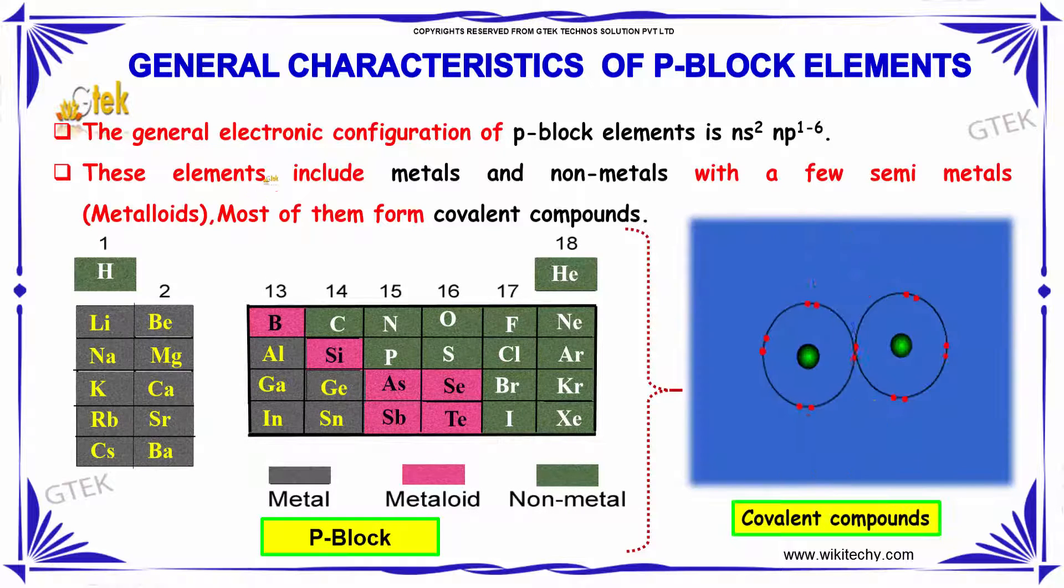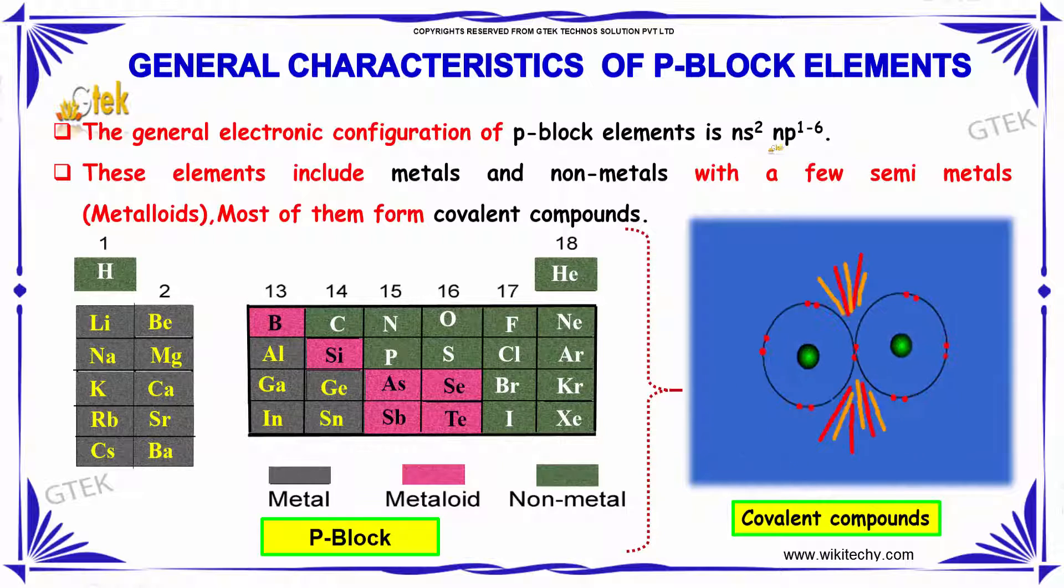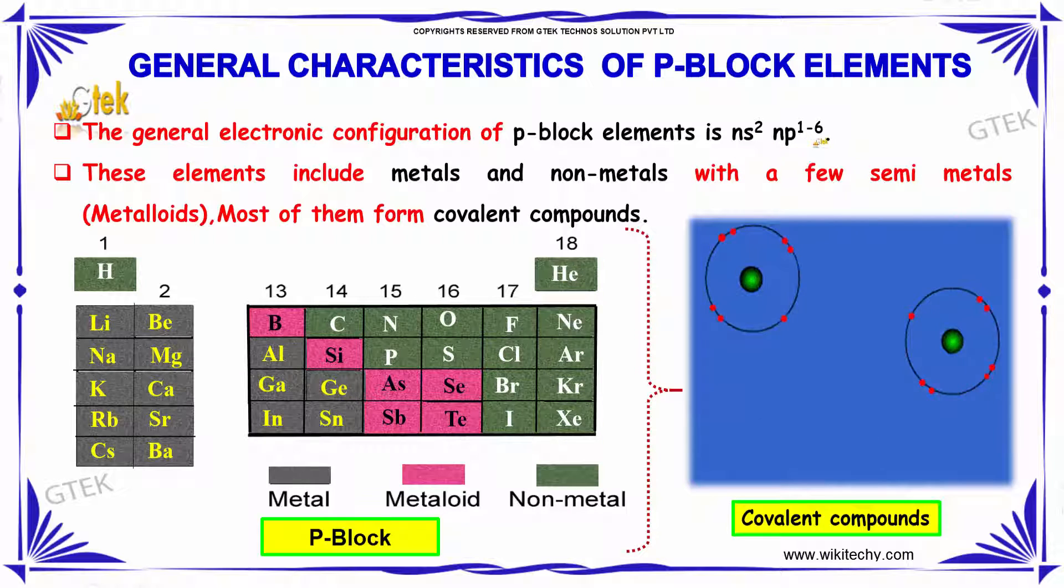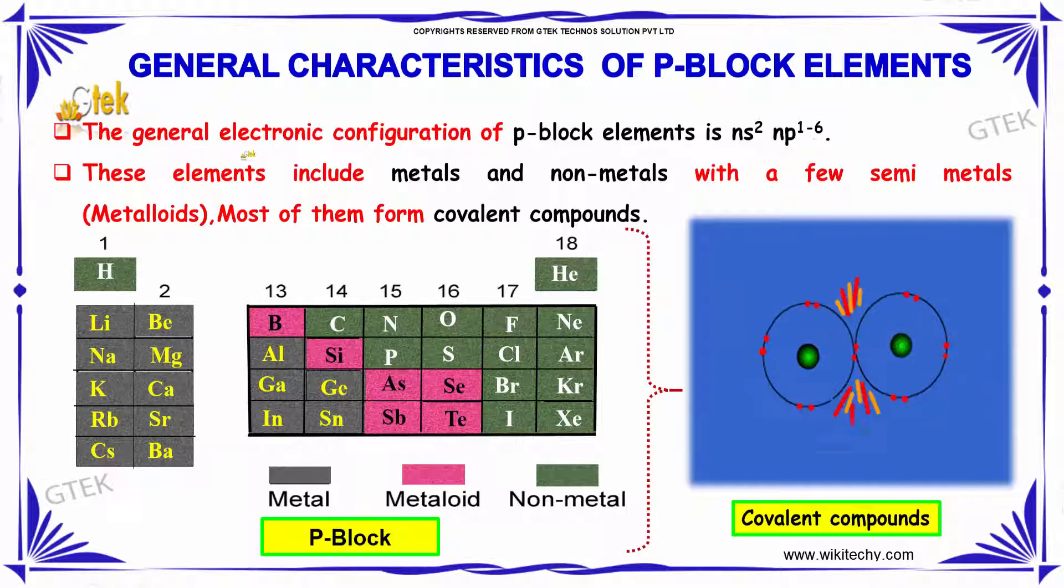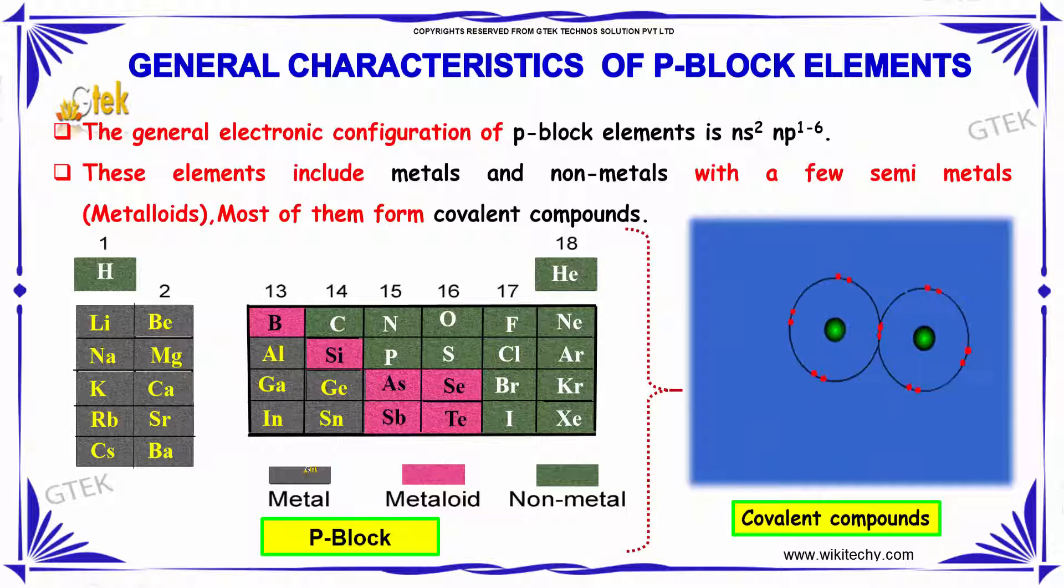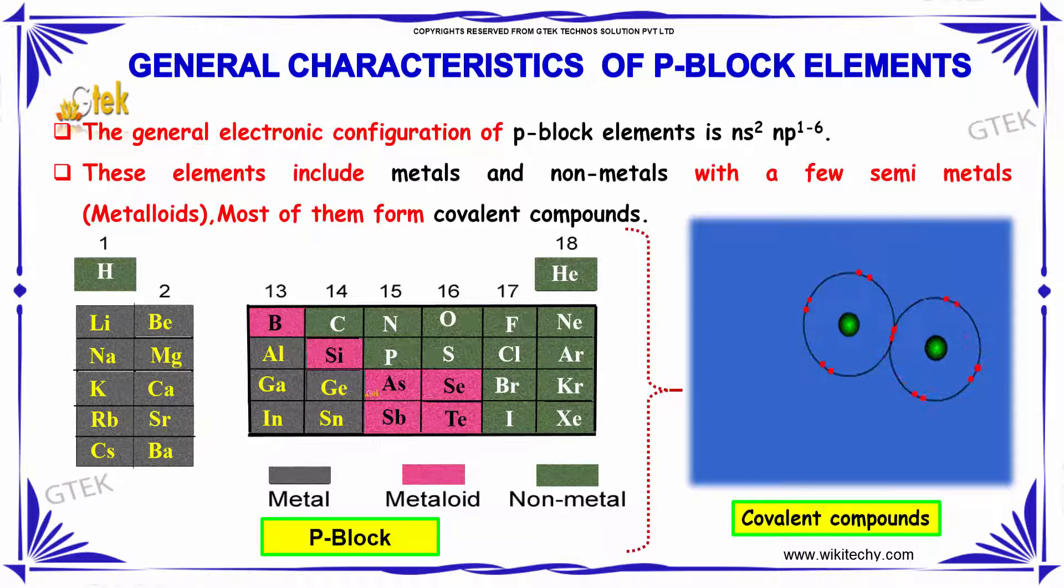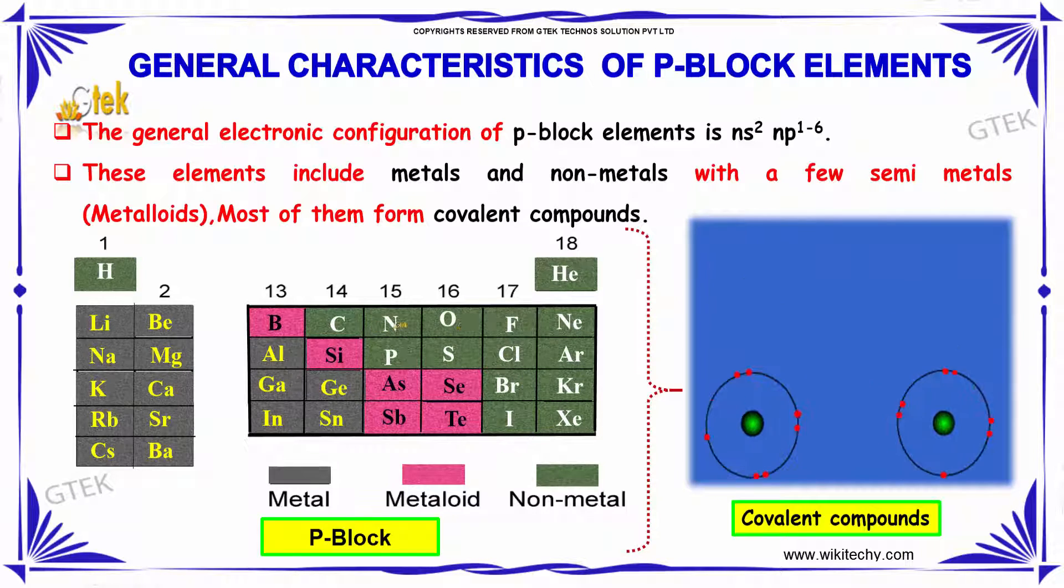The general electronic configuration of P-block elements is NS2-NP1-6. These elements include metals, metalloids, and non-metals, with the brown color indicating metals on the periodic table.